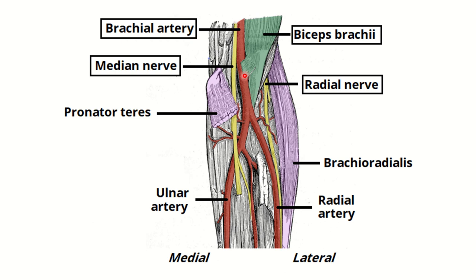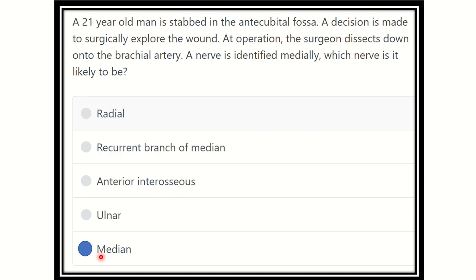We can see that the brachial artery lies centrally. Medial to it is the median nerve, and lateral to it is the radial nerve. So in the antecubital fossa, the median nerve lies medially and the radial nerve lies laterally. Therefore, our answer is the median nerve, as it is located medially from the brachial artery in the antecubital fossa.